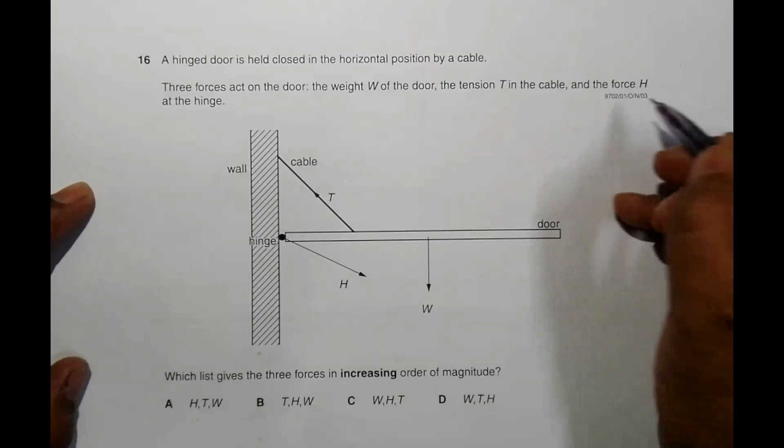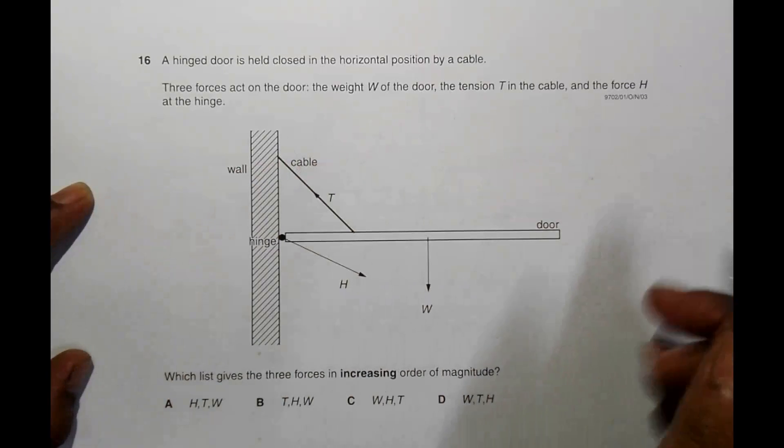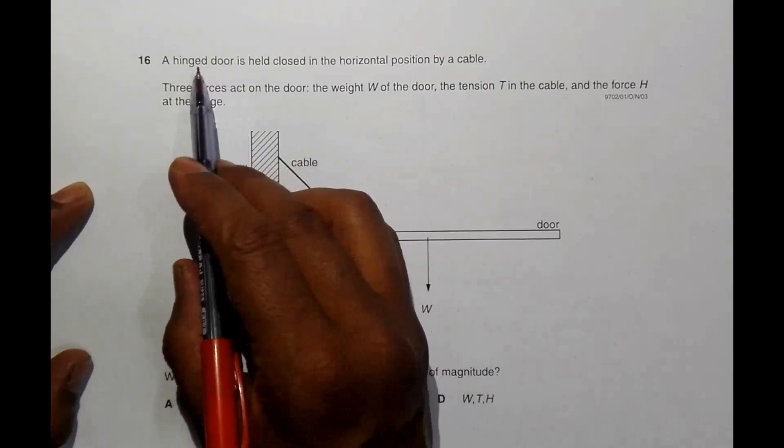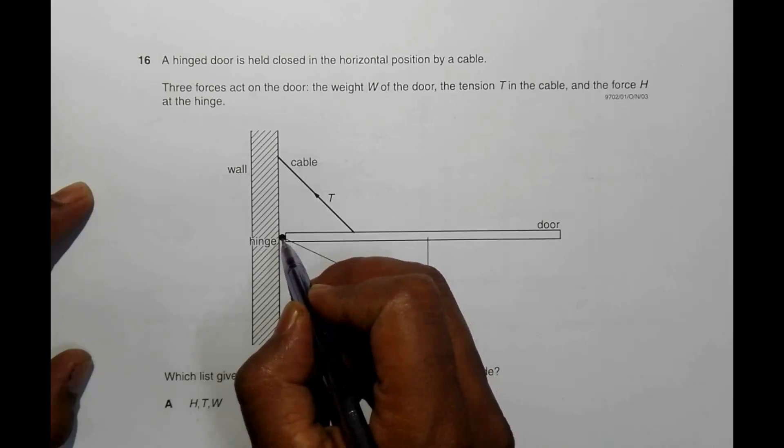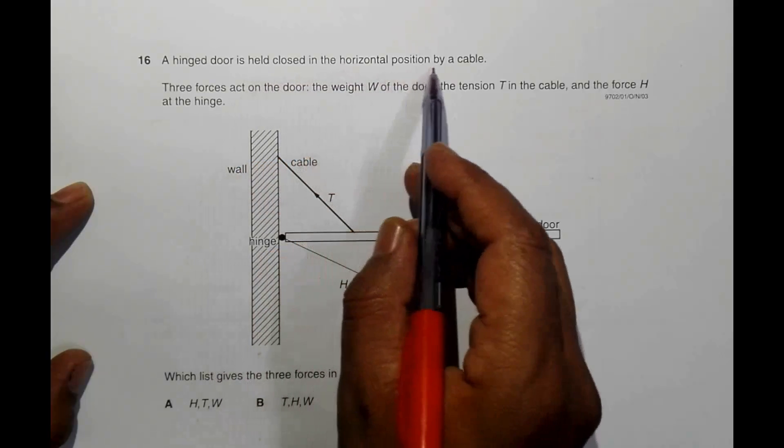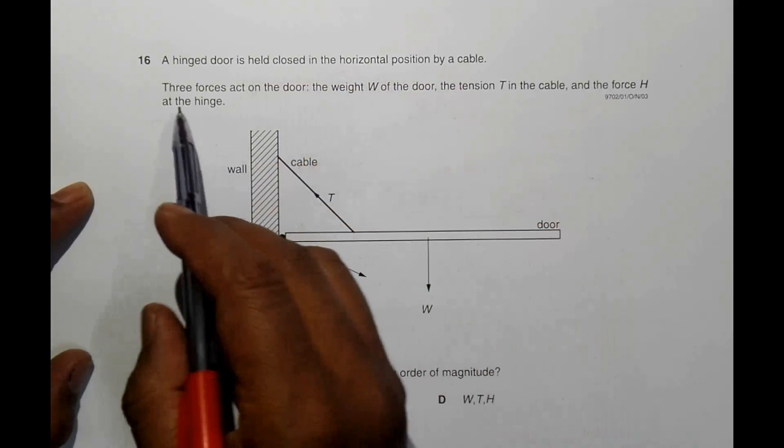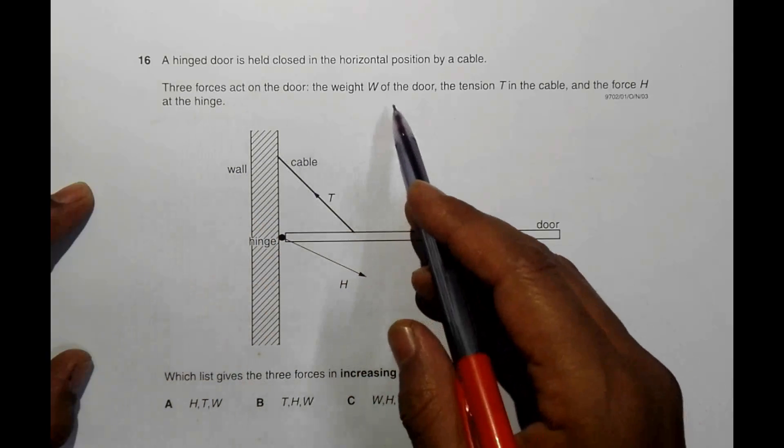Hello folks, this is the 2003 October-November paper 1, question number 16. A hinged door, hinged means that it can rotate around a certain axis and this axis itself is called a hinge, is held closed in the horizontal position by cable.